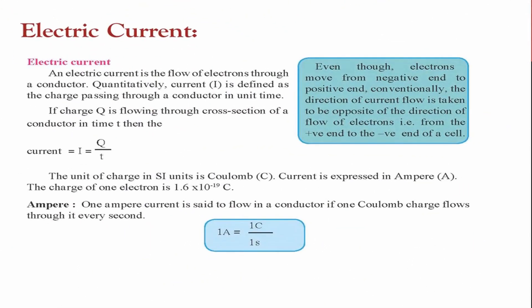Electric current is the flow of electrons through a conductor. Current flows only when a potential difference is applied. Quantitatively, current is defined as the charge passing through a conductor in unit time: I = Q/T. The unit of charge in the SI system is the coulomb, and current is expressed in amperes. One ampere is defined as the flow in a conductor when one coulomb of charge flows every second: 1 A = 1 C / 1 s.